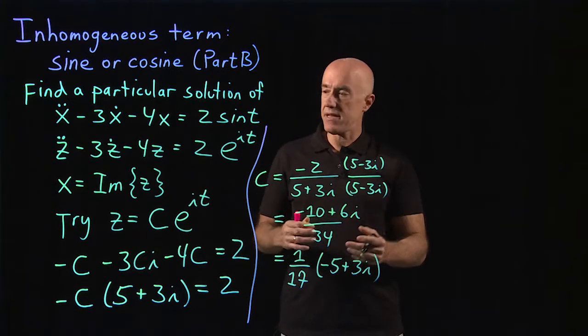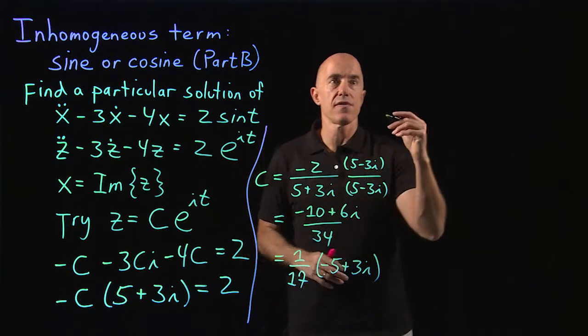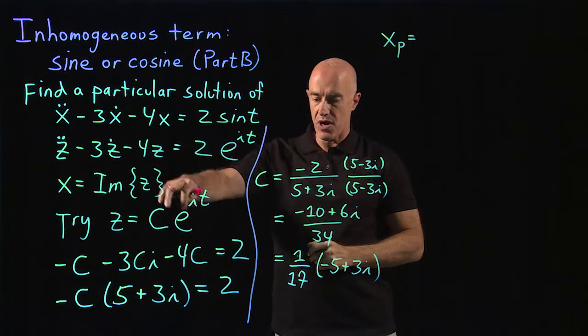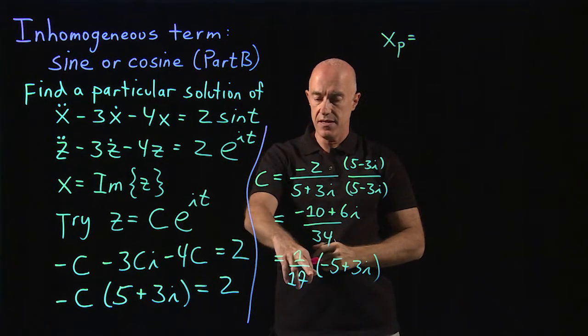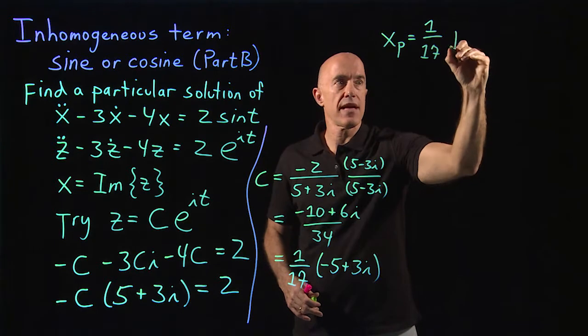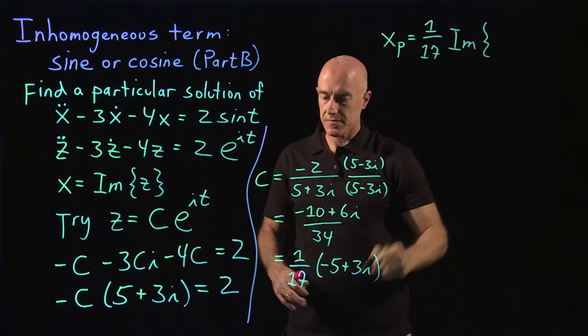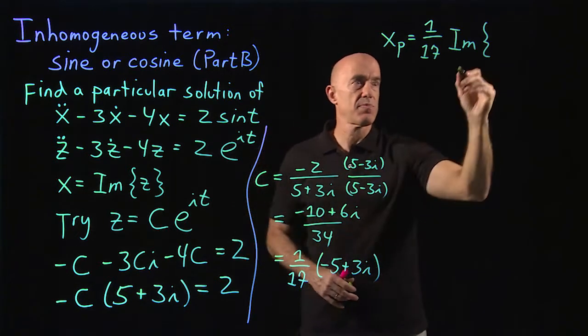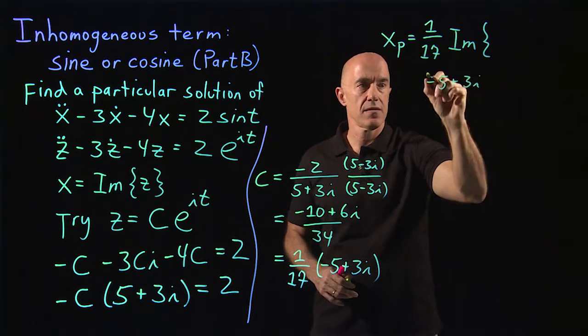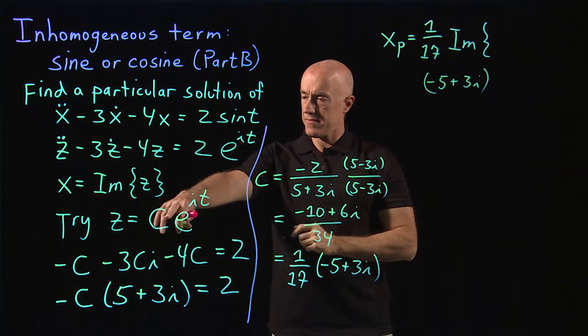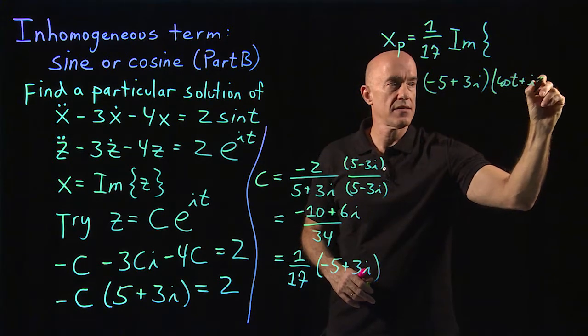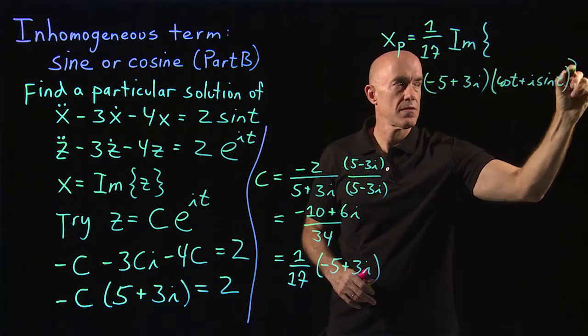The final step then, we have our z, but we need our x. So the final step is to find the particular solution, which is the imaginary part of c times e to the it. We have a 1 over 17, and then we have the imaginary part of minus 5 plus 3i. So let me write it down here. Minus 5 plus 3i times e to the it, which is cosine t plus i sine t.